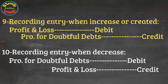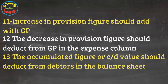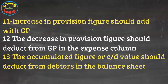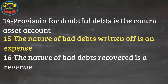These tips cover recording entries when provision is increased or decreased. An increase in provision for doubtful debts should be deducted from gross profit, and a decreased value should be added to it. The accumulated figure is deducted from debtors in the balance sheet. Provision for doubtful debts is a contra account, and bad debts write-off is an expense in nature.